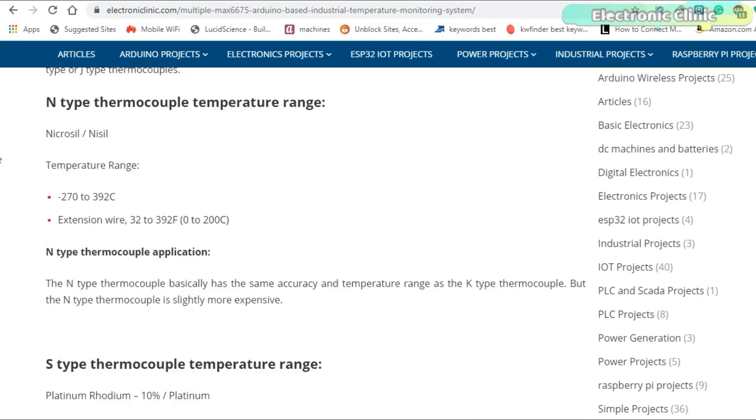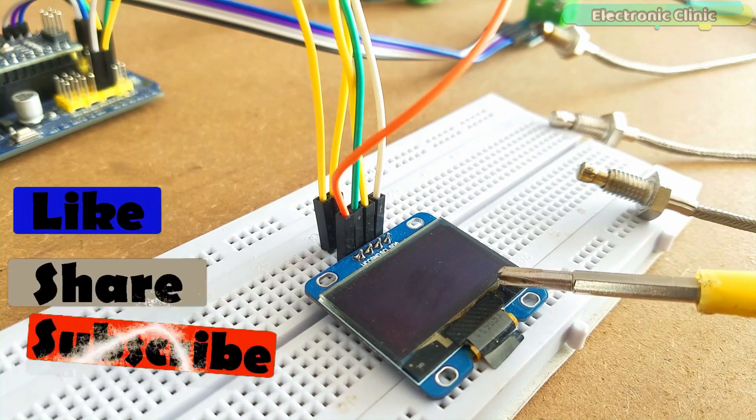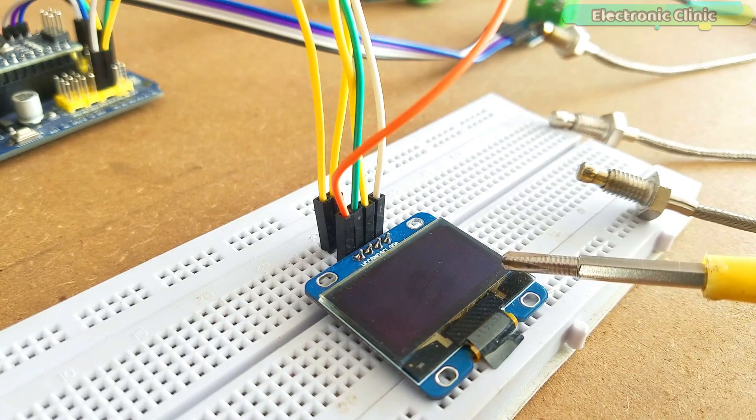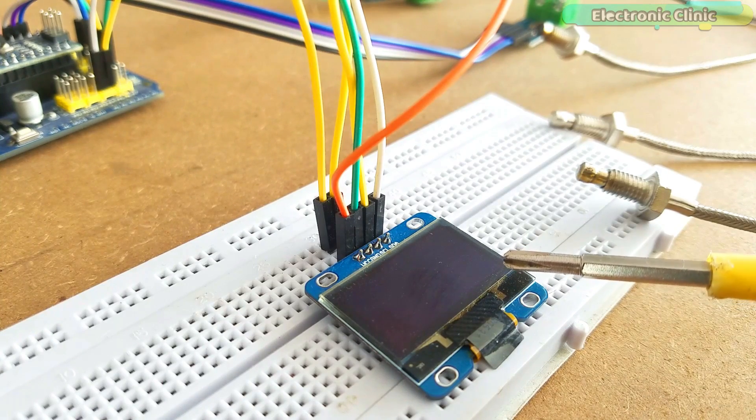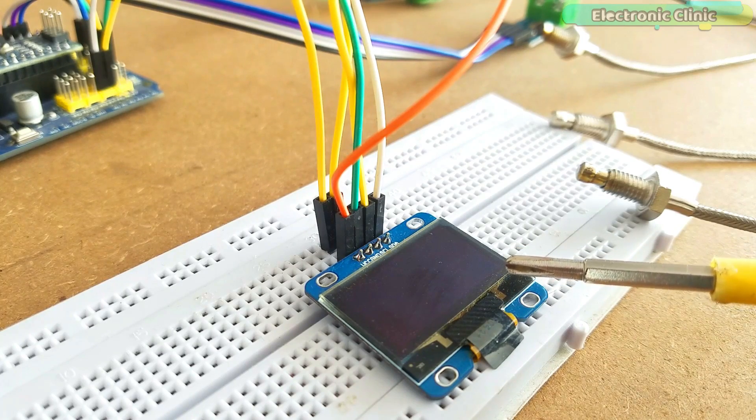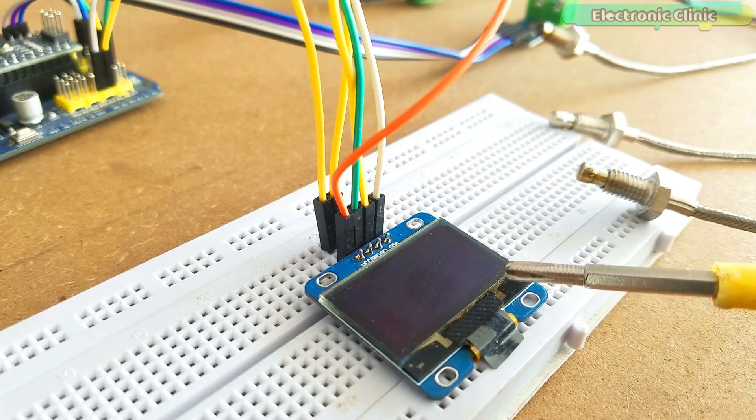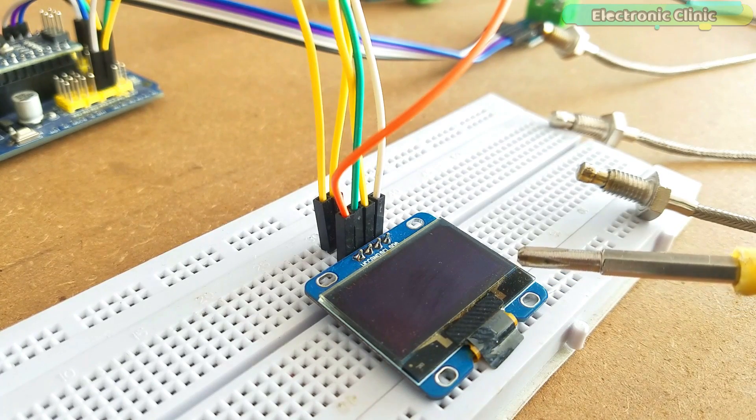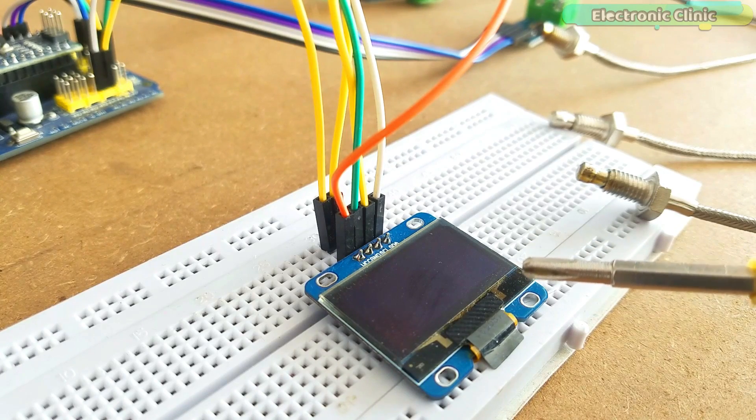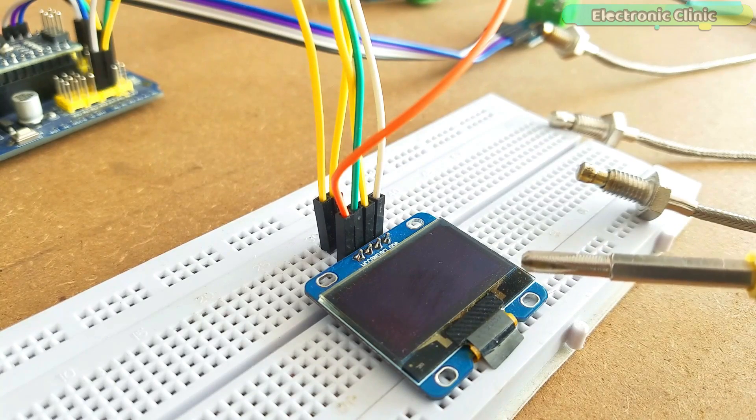This is a monocolor 0.96 inch with 128 by 64 pixels OLED I2C display module. OLED stands for Organic Light Emitting Diode. There are two different models of the same OLED display module which are SSD1306 and SH1106. The one you can see on the screen is the SH1106.